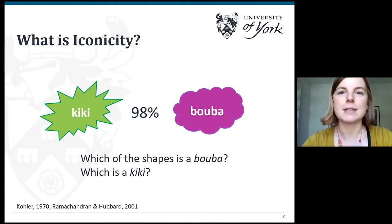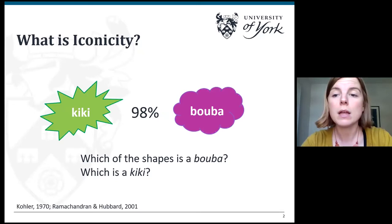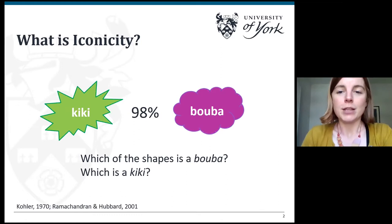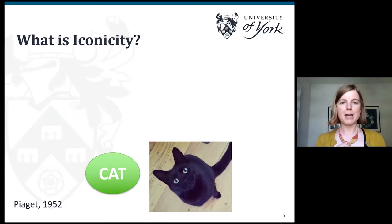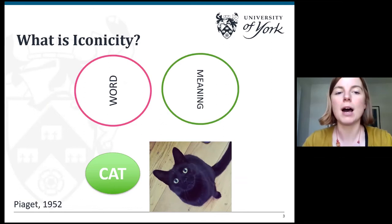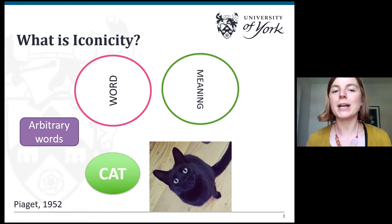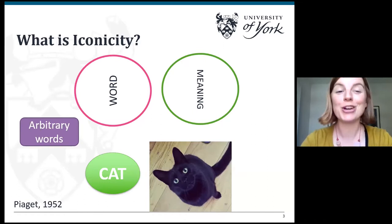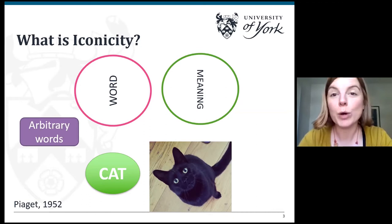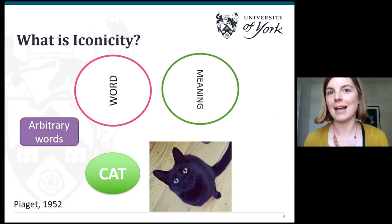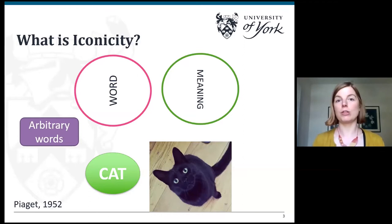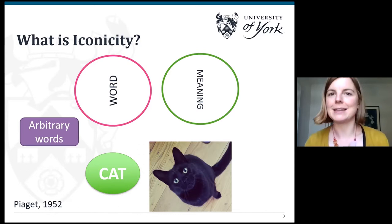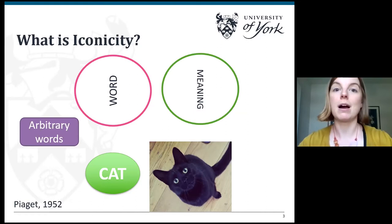Across languages, this association is pretty consistent. We can also see this in English words such as tiny and huge — tiny sounds small and huge sounds quite big. Piaget suggested that words and their meanings are arbitrary. If we take a concept such as my cat Edward, and the word cat, these two things are not related. There's nothing particularly cat-like about the word cat — if we replaced it with the word dog, dog wouldn't feel any less cat-like. So these two things are not connected; they are arbitrary from one another.